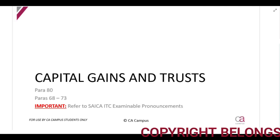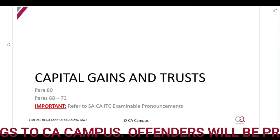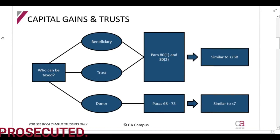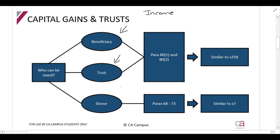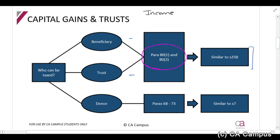We are now going to be looking at capital gains tax and trusts. The first thing to understand is that, the same as with income, capital gains can also be taxed in the hands of a beneficiary, the trust, or a donor in exactly the same way. When we looked at income, we saw that section 25B capital applies to beneficiaries and trusts. For capital gains tax purposes, the relevant provisions are paragraph 80, paragraph 81, and paragraph 82.